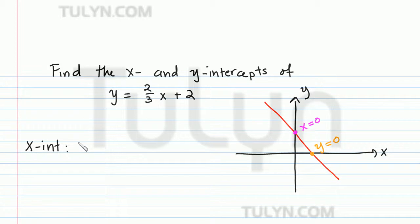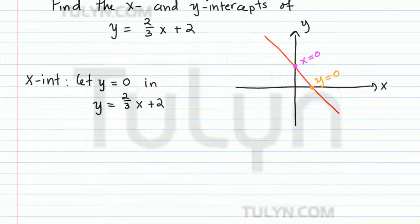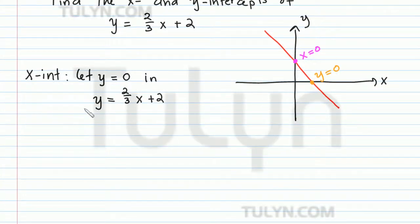In order to find our x-intercept, since we know that y is equal to zero, we let y equal zero in the formula. So y equals two-thirds x plus two. So we replace the y with zero. Our new equation becomes zero equals two-thirds x plus two, and now we want to solve for x.